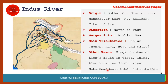The Bhakra Nangal dam is the highest dam in India, with a height of 226 meters, and it is situated on the Sutlej river. One more important point: in Tibet, the Indus is also known as Singi Khamban, meaning 'lion's mouth,' because it appears like a lion's mouth. In Hindi, it is also known as Sindhu river.